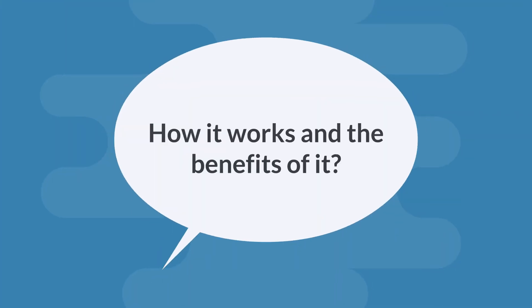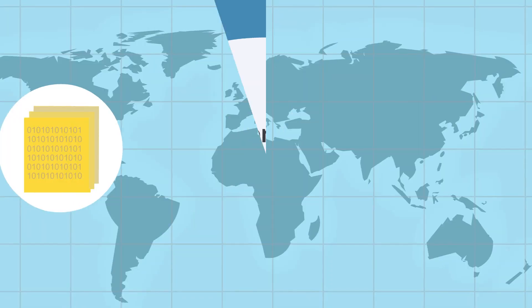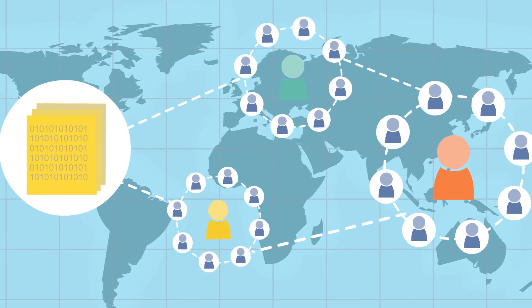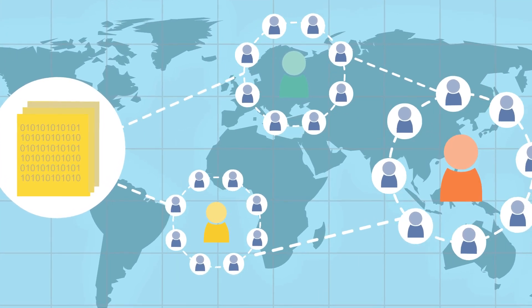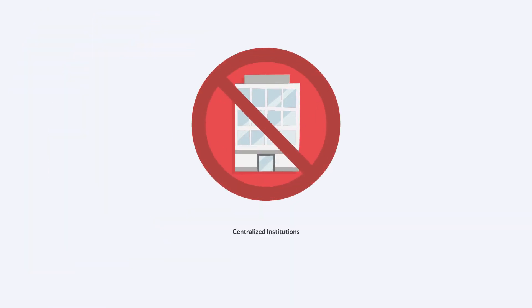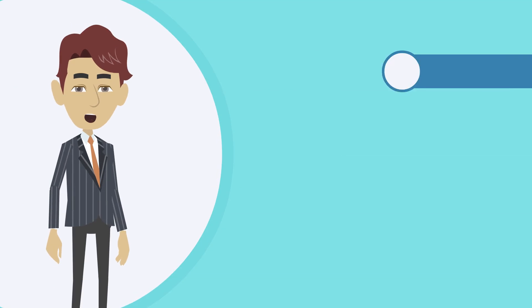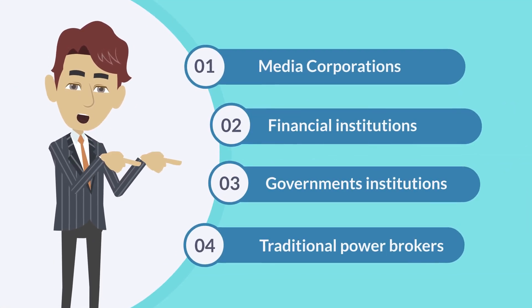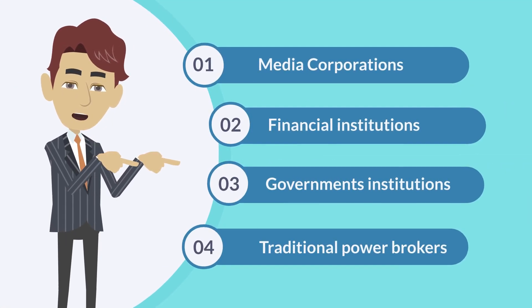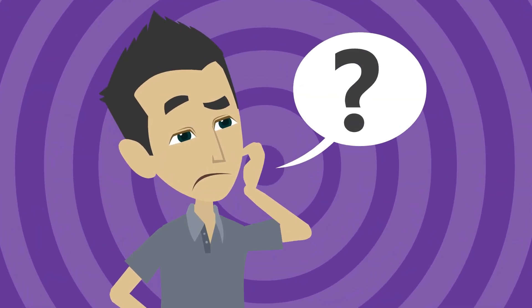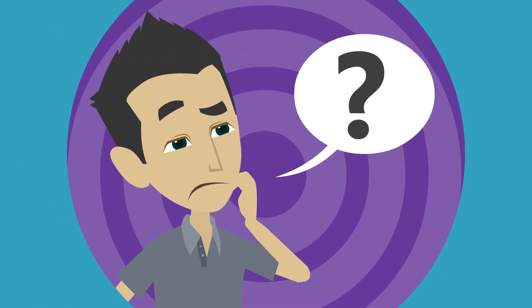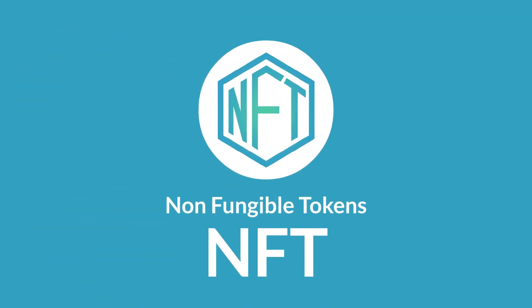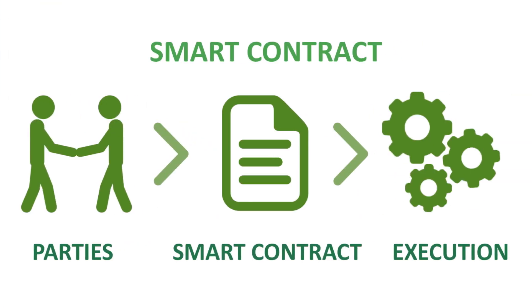To understand how blockchain will change the world, you need to understand a concept called democratized information — how it works and the benefits of it. Democratized information means it gives control and transfer of information back to people, rather than centralized institutions like media corporations, financial institutions, governments, or your traditional power brokers.